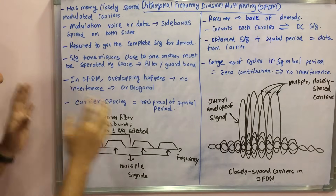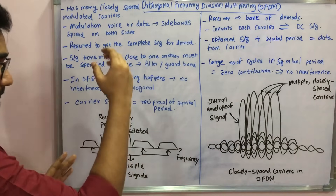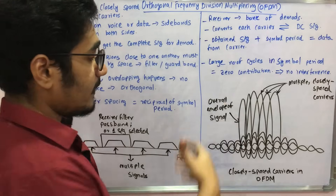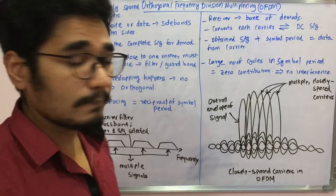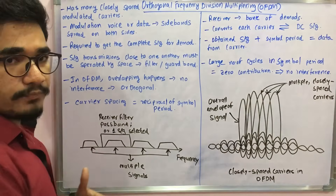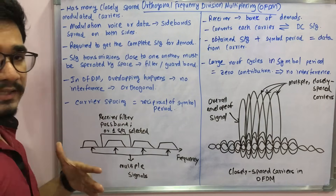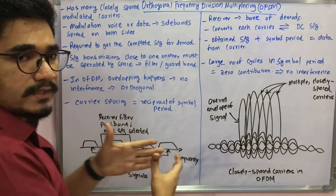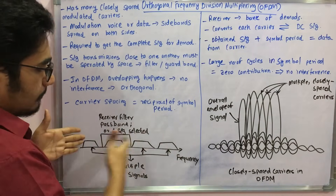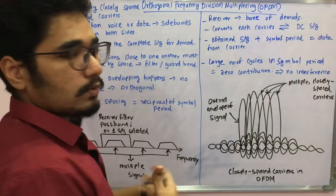The spacing between each of the carriers is equal to the reciprocal of the symbol period — that is where the time factor comes into the picture. You have a setup of multiple signals at different frequencies. The receiver filter, which is a pass-band filter, selects one signal at a time. There is space available for multiple frequencies — these are the bands or frequency divisions that are used.